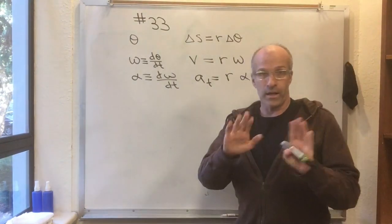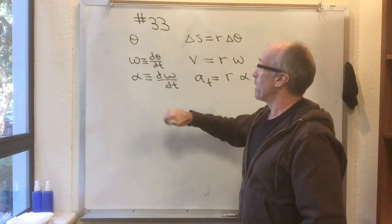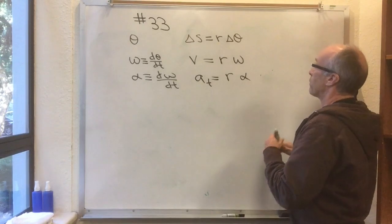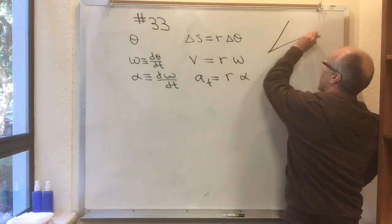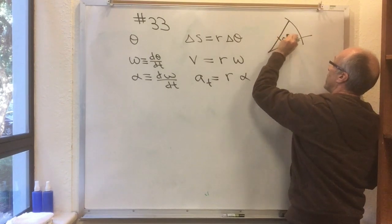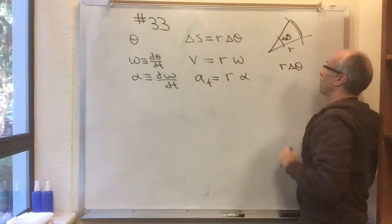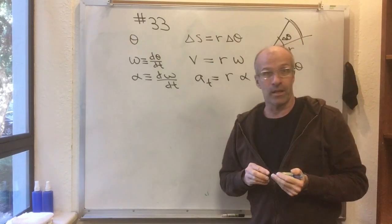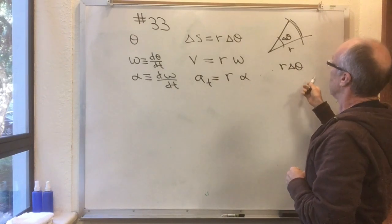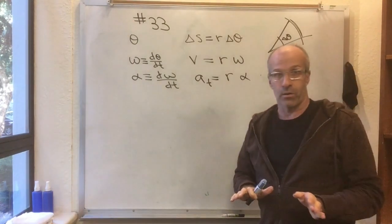I need to review a couple of things because we're going to use them a lot. If you measure theta in radians, then the amount of arc traversed, if you have an angle delta theta, that amount of arc is r delta theta. And if delta theta is 2 pi, then you've got 2 pi r. So there are 2 pi radians in a circle.